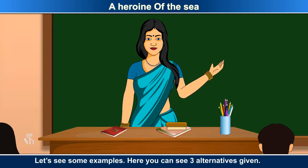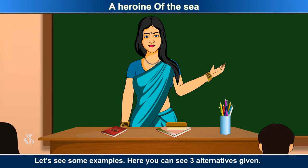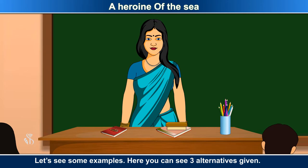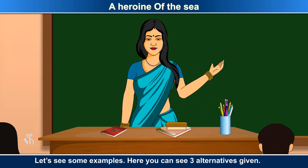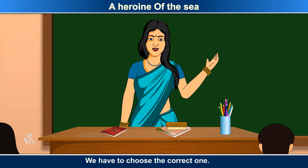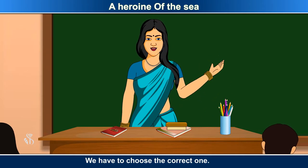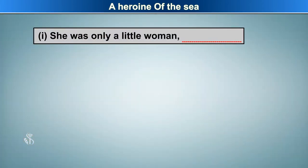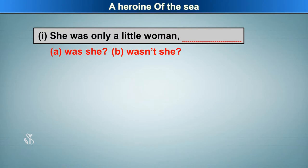Let's see some examples. Here you can see three alternatives given. We have to choose the correct one. 'She was only a little woman.' The options are: Was she? Wasn't she? Wasn't you? The correct answer is: Wasn't she?